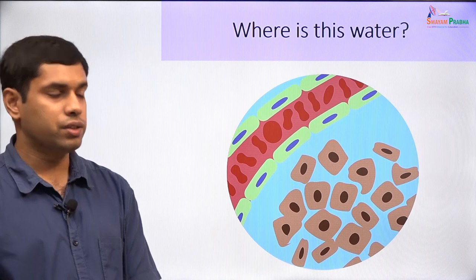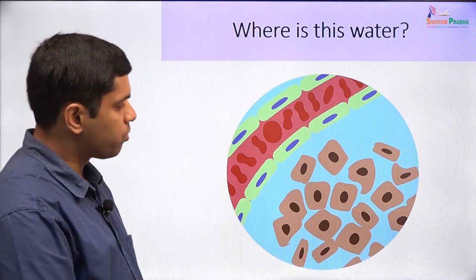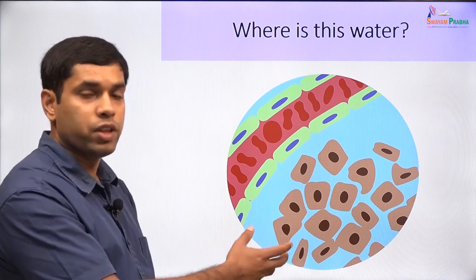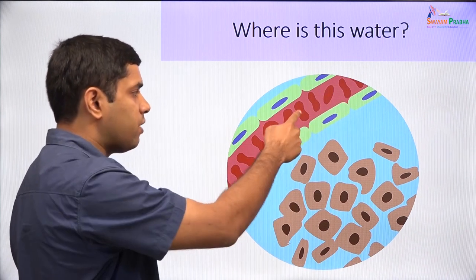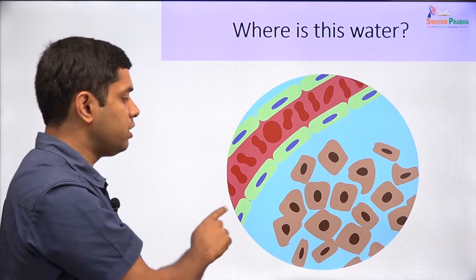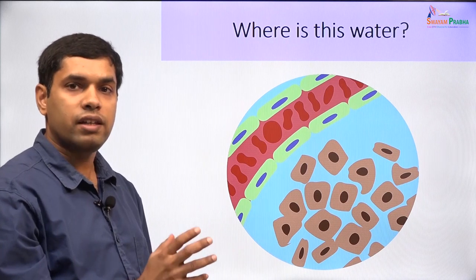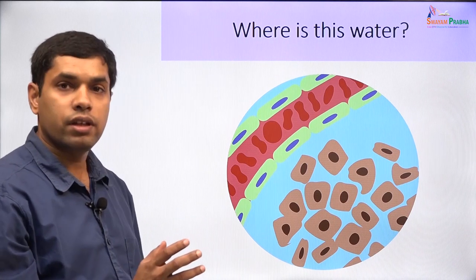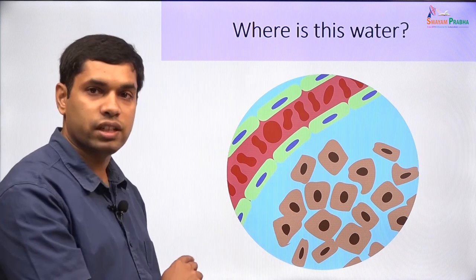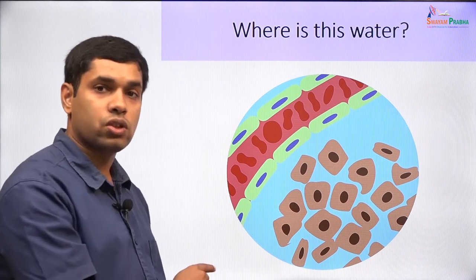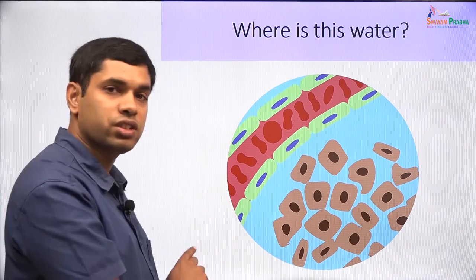Where is this water present? We said 60% of the body is water — where is this water present? In this figure, you can see cells and the fluid that is just around the cells; this is a capillary having RBCs within it. One easy way of dividing the body water is to divide it into the water that is inside the cells and the water that is outside the cells. The water inside the cells is called the intracellular fluid and the water outside the cells is called the extracellular fluid.